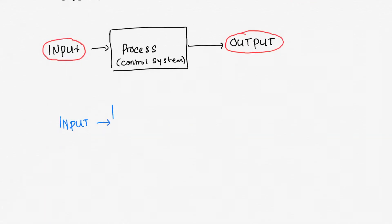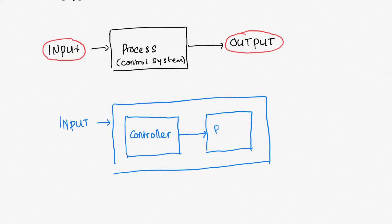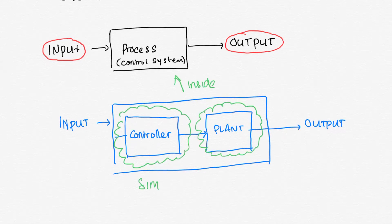Control systems may consist of a bunch of smaller subsystems. As we can see here, inside the process block or control system block, there are two additional subsystems. The first one is a controller and the second is called a plant. This is the simplest form of a control system block.